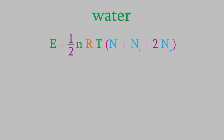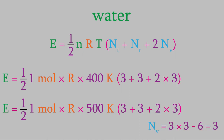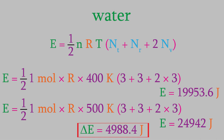Finally, let's try it for water. Water is a nonlinear molecule with 3 atoms, so there are 3 translational, 3 rotational, and 3 vibrational degrees of freedom. That gives us 19,953.6 J at 400 K and 24,942 J at 500 K — a difference of 4,988.4 J for water.